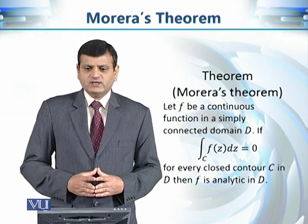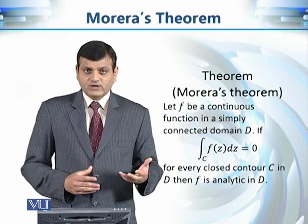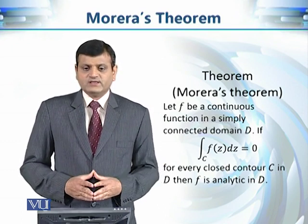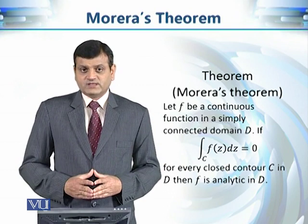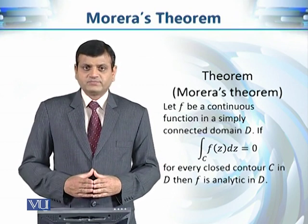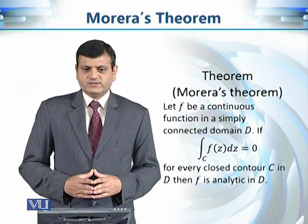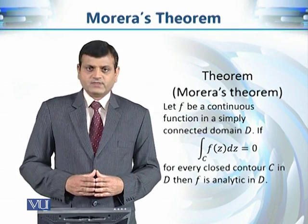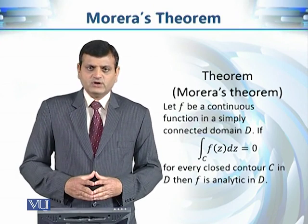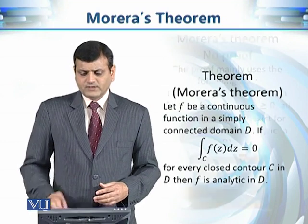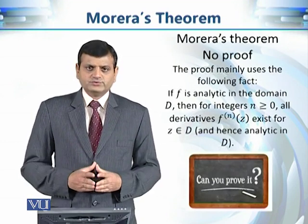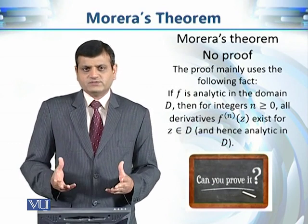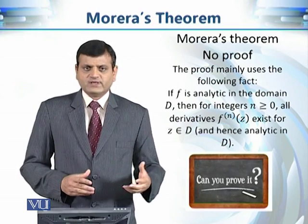Using Morera's theorem, we can check whether a function given as a sum or integral of other functions is analytic or not. For example, the Riemann zeta function can be checked for analyticity using Morera's theorem. We can also check whether the gamma function is analytic using Morera's theorem, and there are many other consequences as well. We are not going to look at the proof of Morera's theorem, but it is a relatively simple proof available in Churchill or Matthew's book.